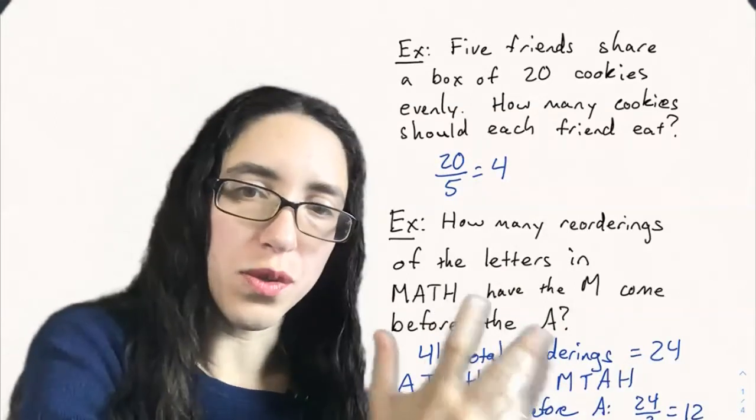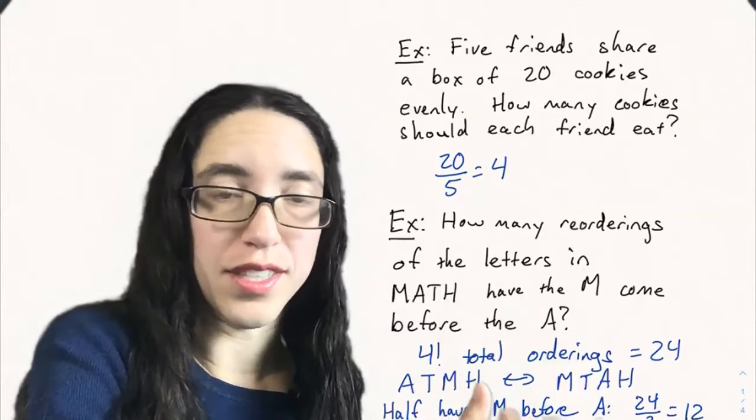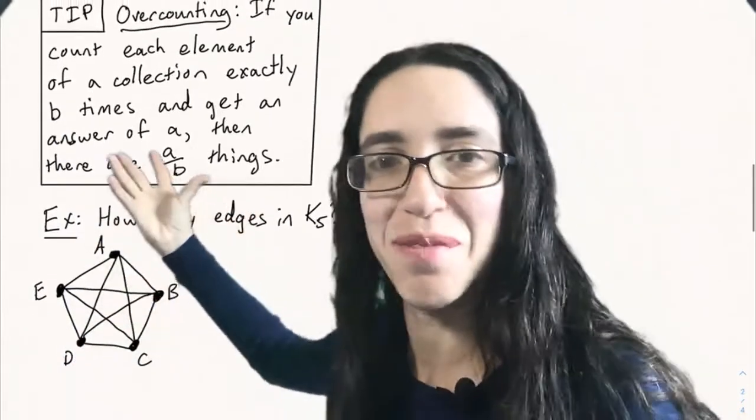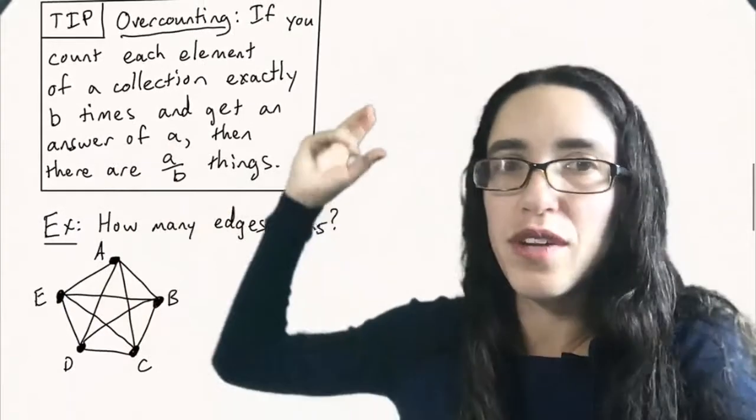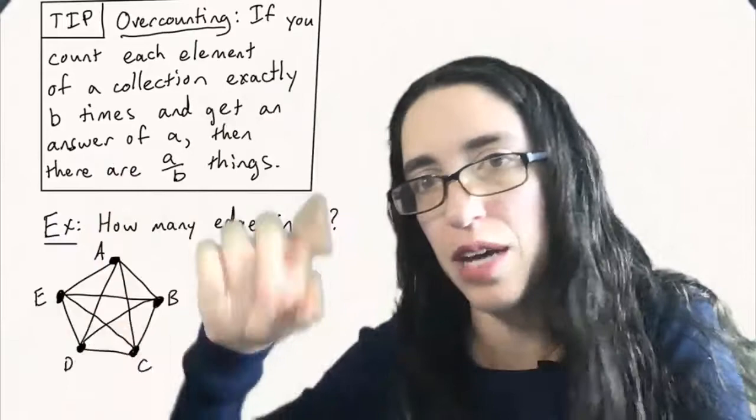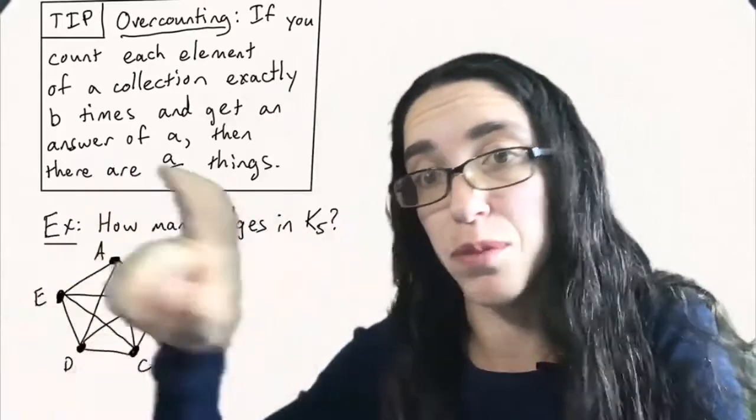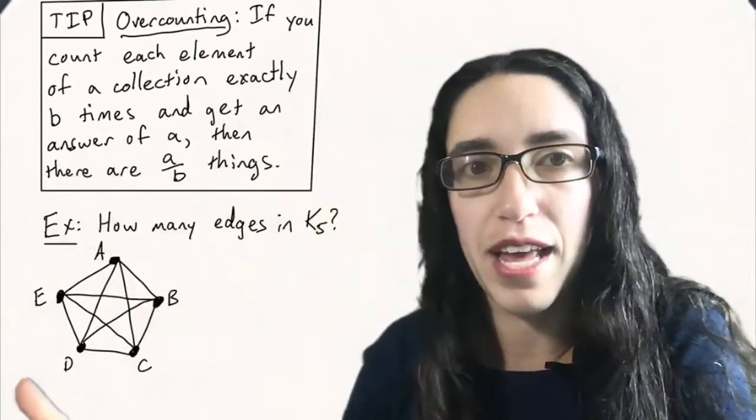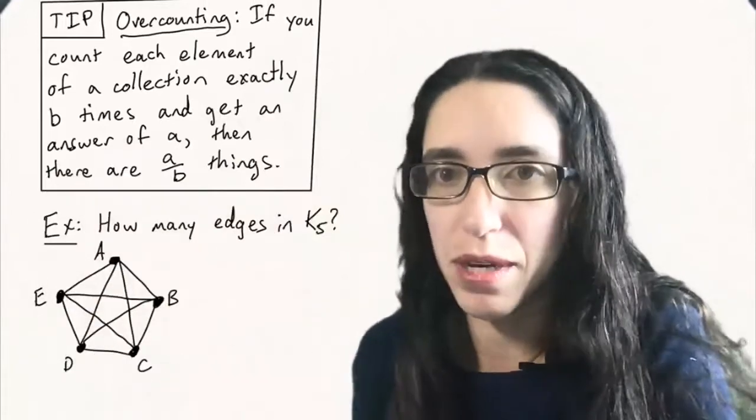This is also something that's called overcounting, and this is a principle that I want to put in a box here. A big tip is if you count each element of a collection exactly b times, so you're counting and each thing is counted b times instead of just once, and you get an answer of a, then actually there's a divided by b things. This is an immensely useful principle.